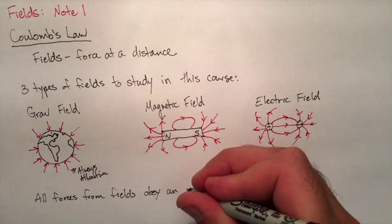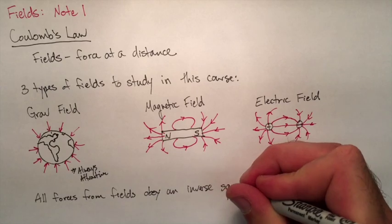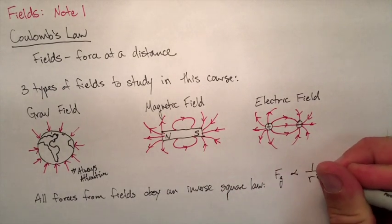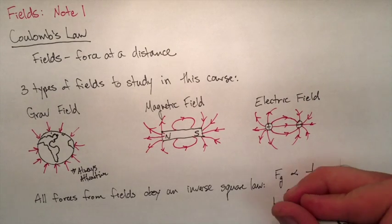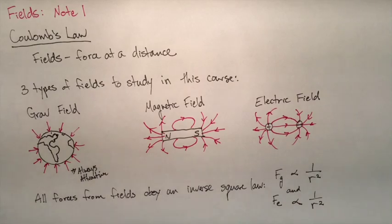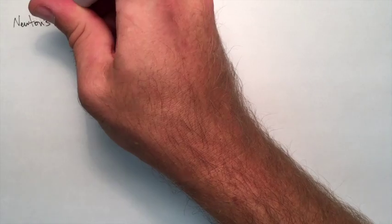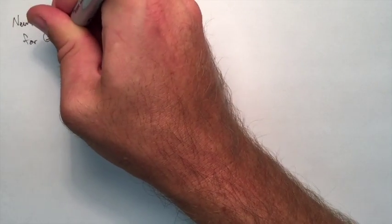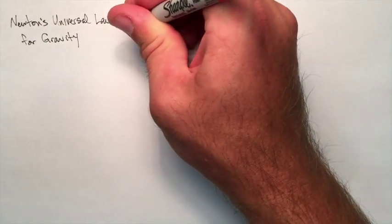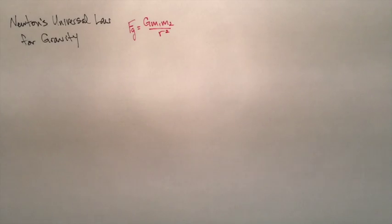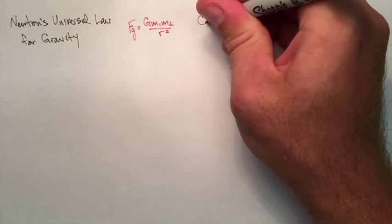All fields obey the inverse square law, which means as you get further and further away from a charged object, the field will get weaker and weaker according to 1 over r squared. And this is the same with a magnetic field as well. This is something we already saw with gravity and Newton's law. So actually to calculate the force in an electric field, we're actually going to compare it to force in a gravitational field. We know how to calculate that from Newton's universal law of gravity. So that's FG equals GMM over r squared.